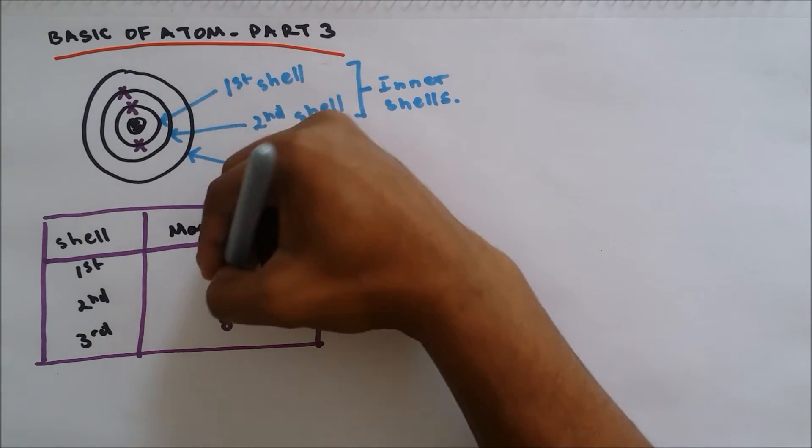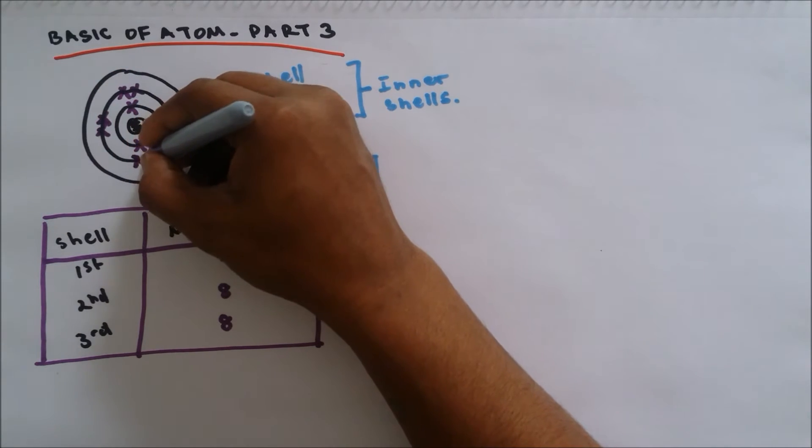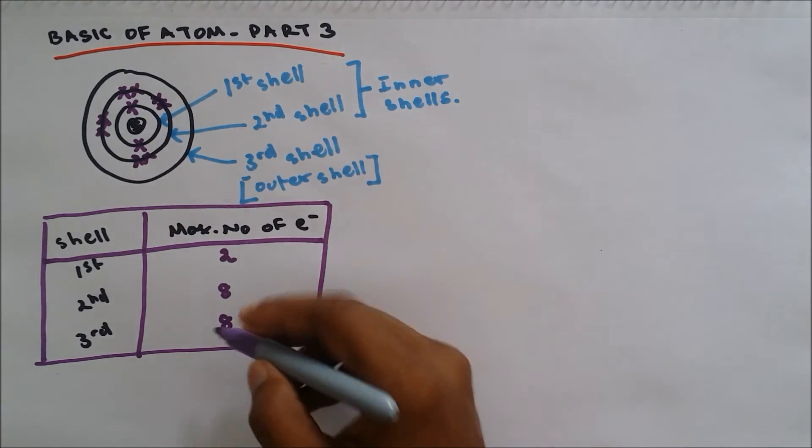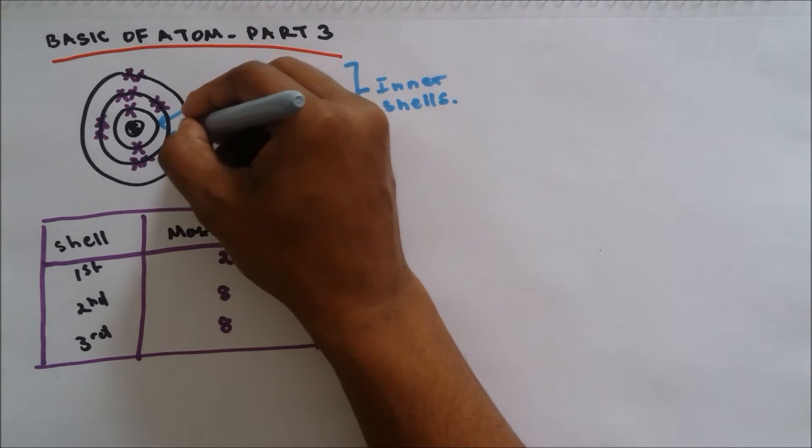Now on the second shell, we have eight electrons, so one, two, three, four, five, six, seven, eight. And then the third shell has eight as well, so we put eight electrons on the third shell.